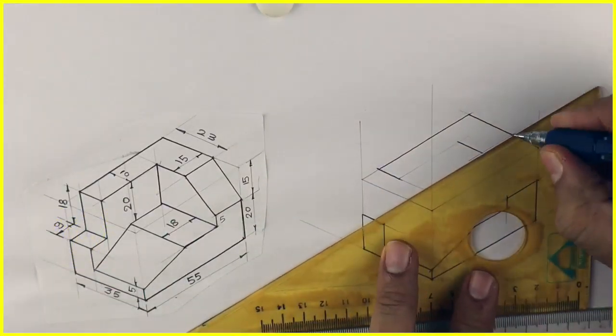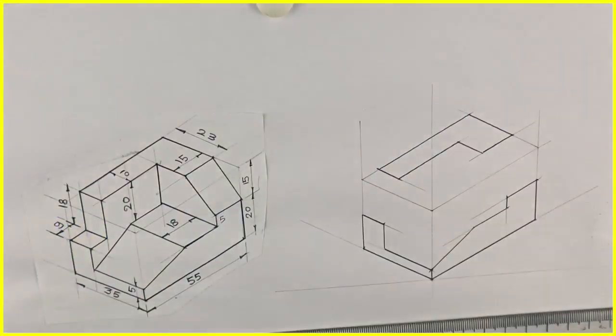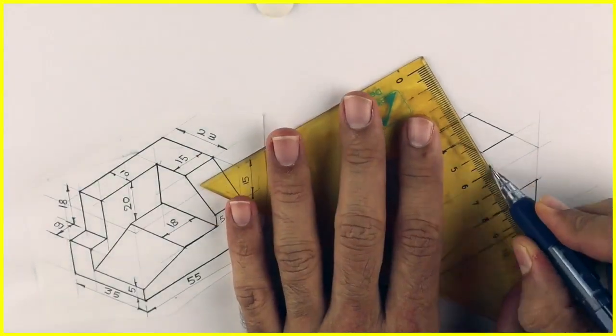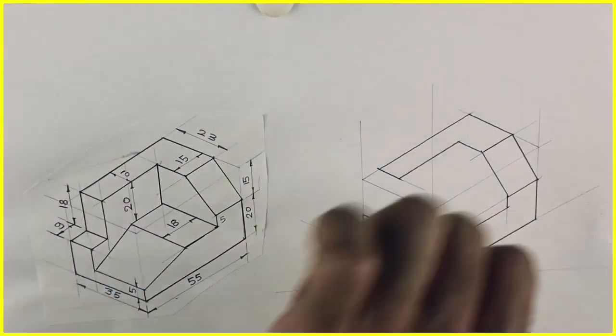See this L shape - we can draw that. After that, this slope, and then this part.